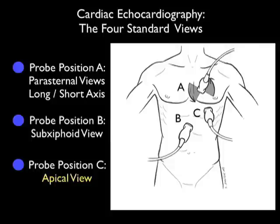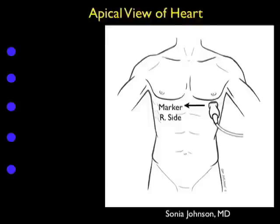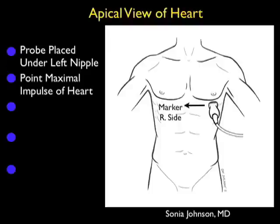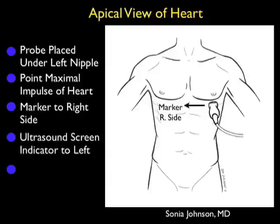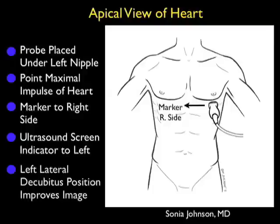Now let's take a look at a pictorial showing how to perform the apical view of the heart. Preferably, you're going to be using a small footprint phased array type probe that can easily get in between the ribs. Position the probe directly underneath the left nipple at about the point of maximal impulse of the heart, with the probe indicator over towards the patient's right side — with the caveat that the ultrasound screen indicator is positioned towards the left of the screen. Moving the patient into the left lateral decubitus position can improve imaging as it moves the heart closer to the probe and moves the lung out of the way.